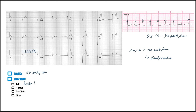Next we have to determine the P wave — we go to lead two. Holy crap, I don't see a P wave. There's no P wave in lead two. Going to AVR — no P wave there either. There's no P wave in lead two, no P wave in AVR.